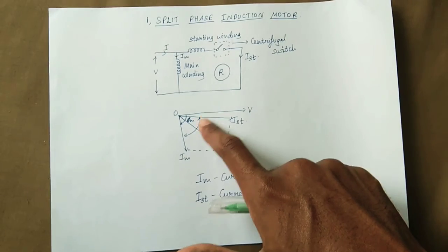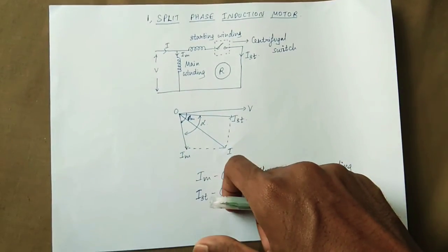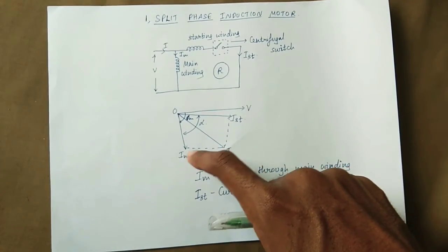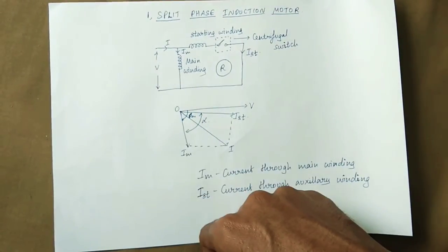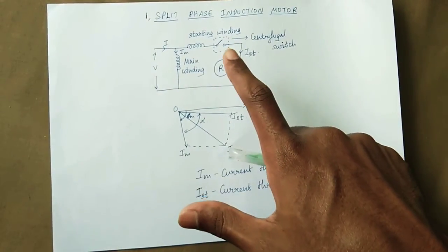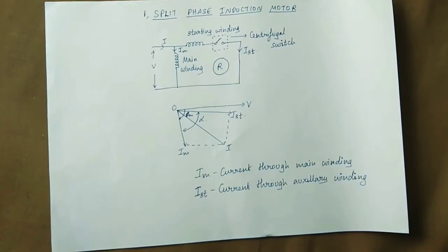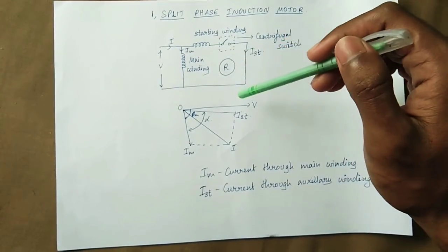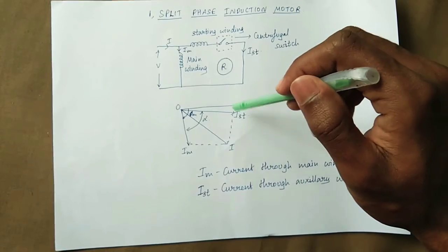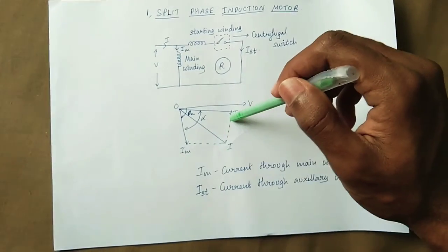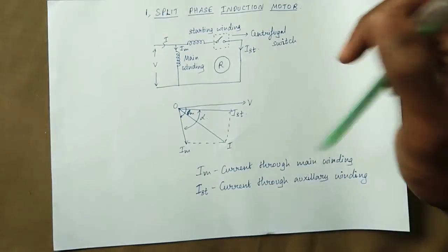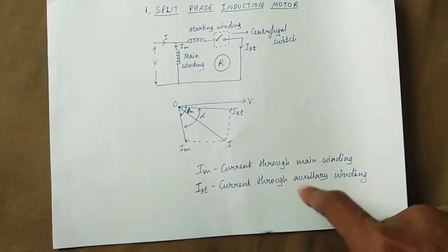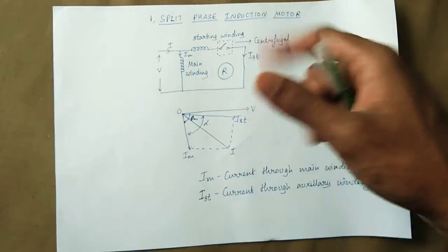As you can see, the angle is lagging. If you use the starting current, it is lagging. The starting winding has high resistance, so the phase angle is small, meaning pure resistance is dominating. There is a little phase angle lagging. The resultant waveform is the total current. IM is the current through the main winding and IS is the current through the auxiliary winding — the starting winding.